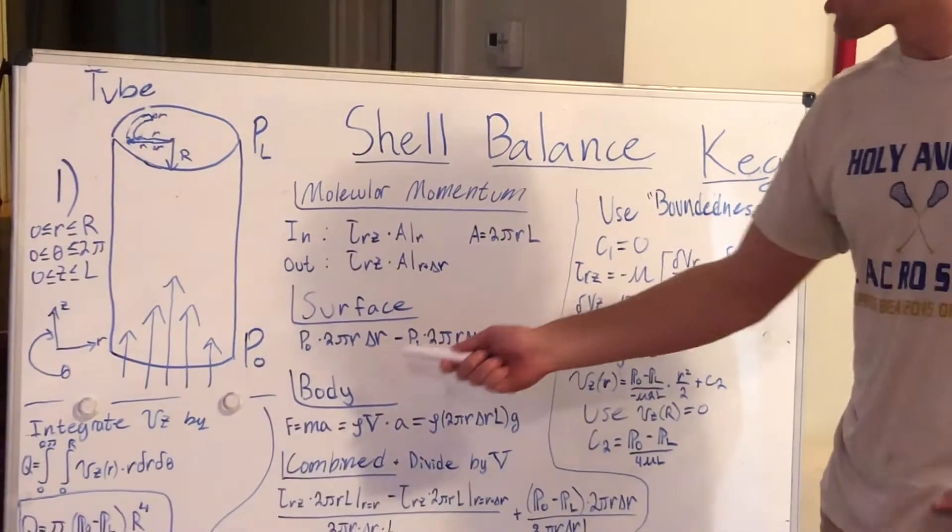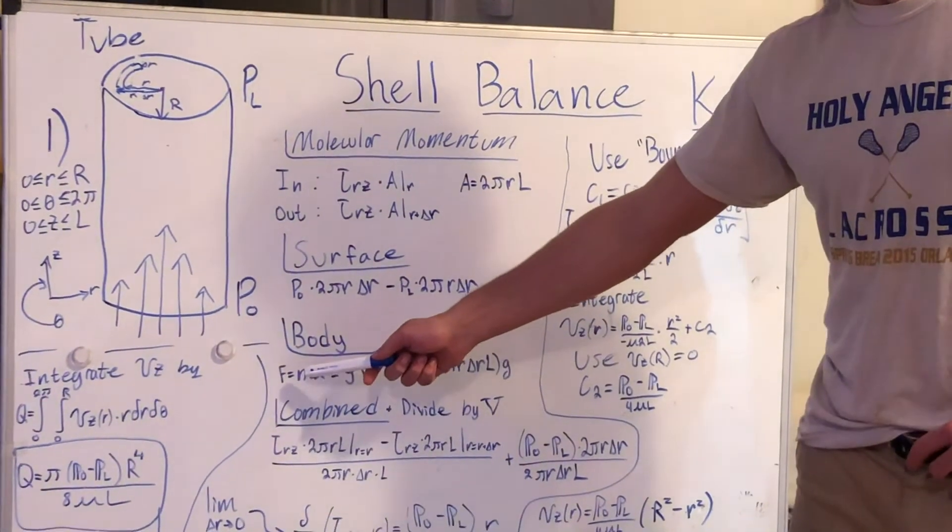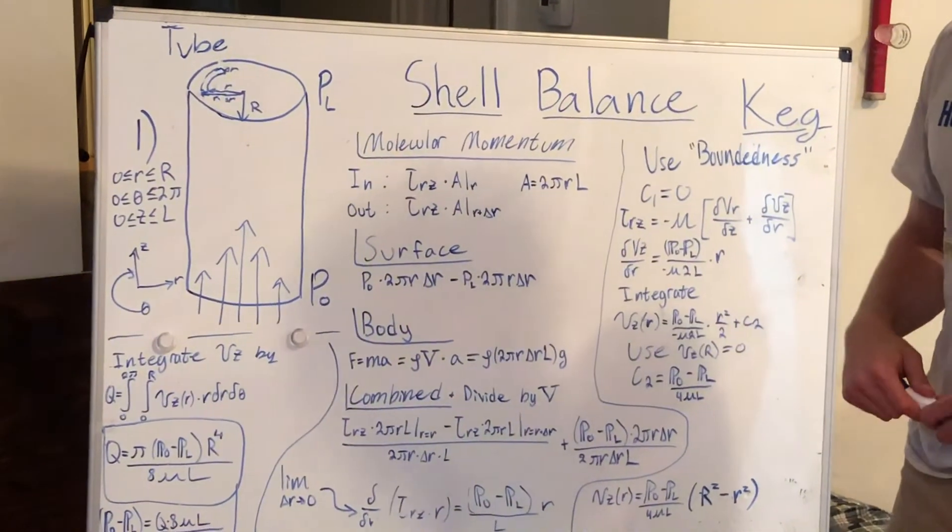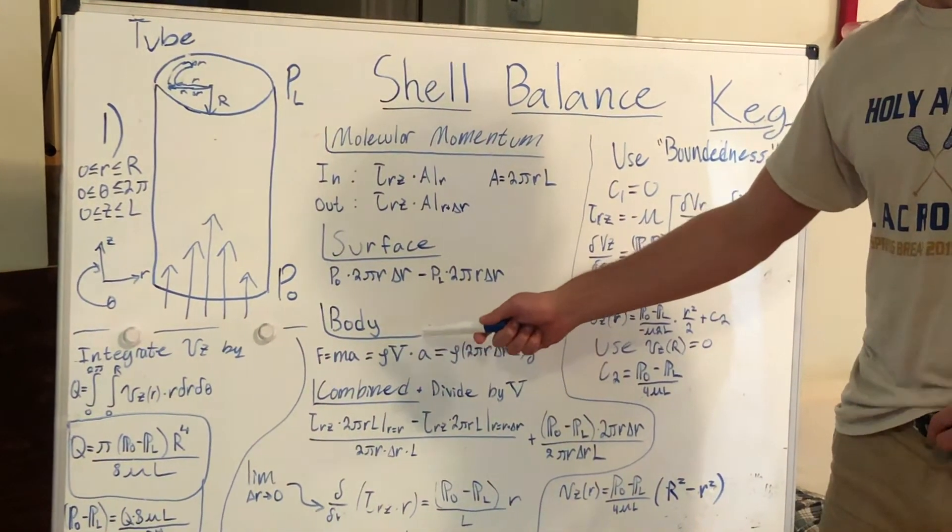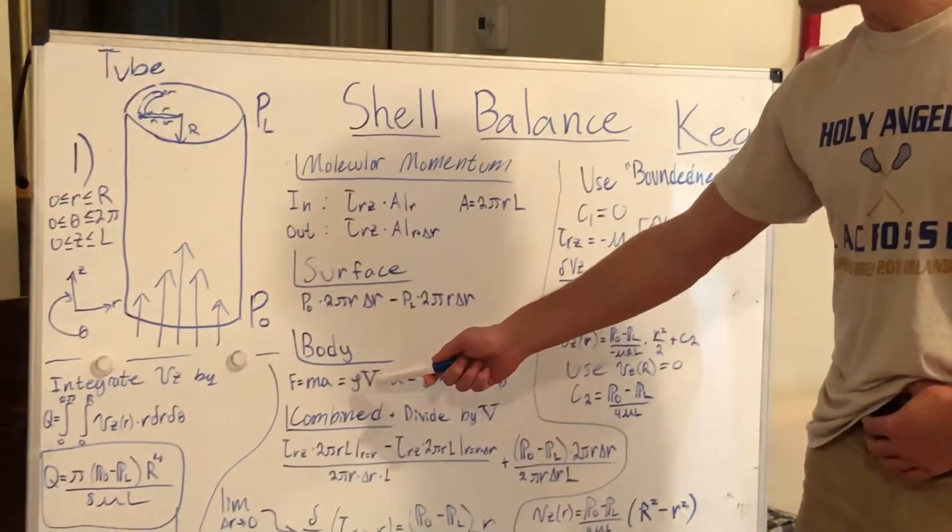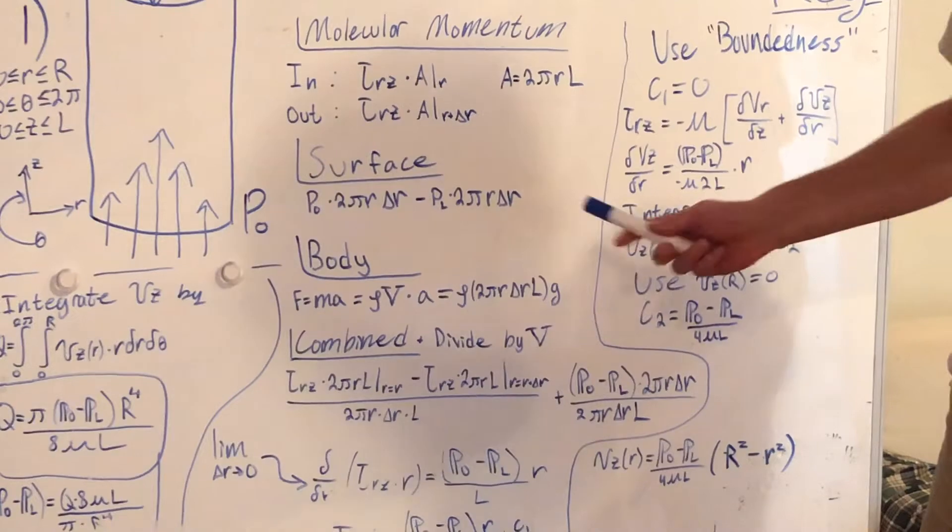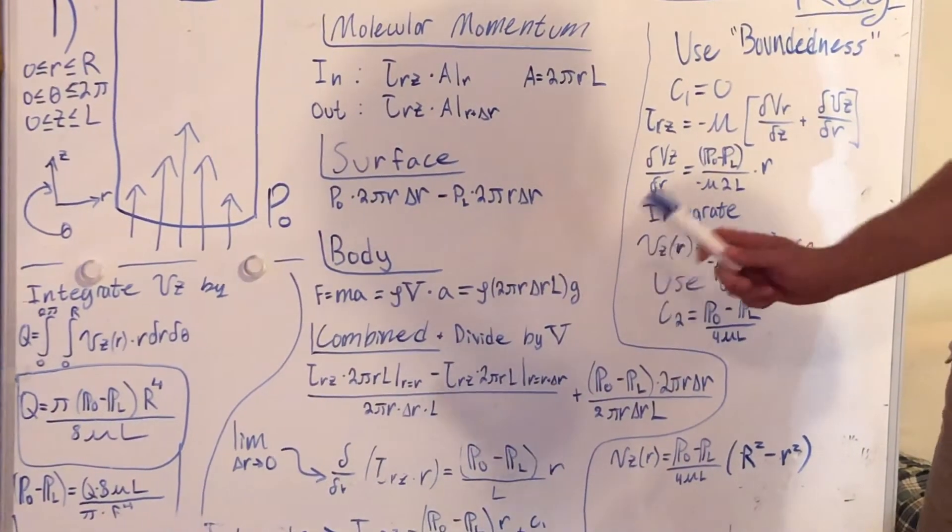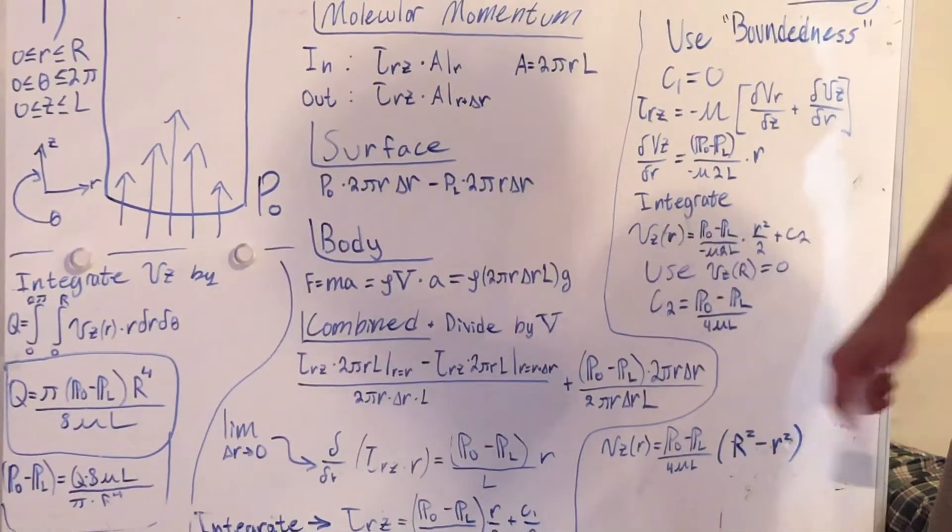And we need to describe our body forces of the fluid. So here, as you can see, as you know from regular physics, F equals mass times acceleration. So in this case, our mass is our density times our volume times our acceleration, which is gravity. So we can further reduce that down to density times 2πr dr L, which is our volume term, times gravity.